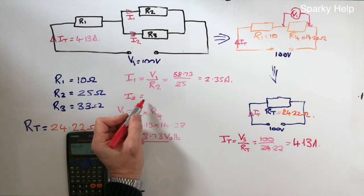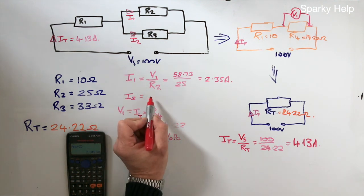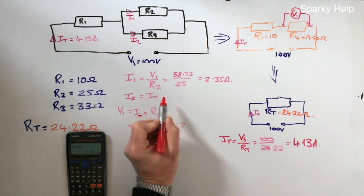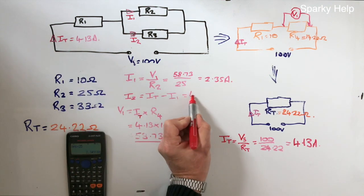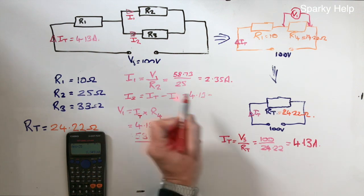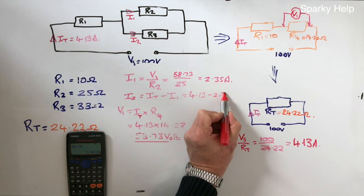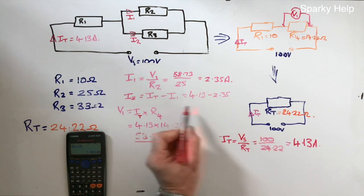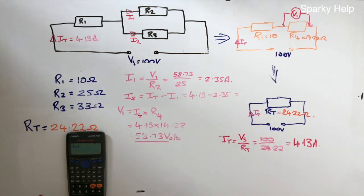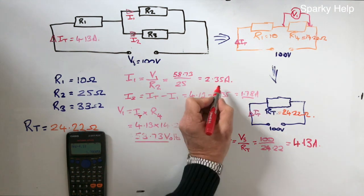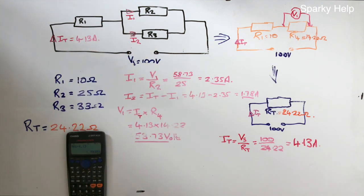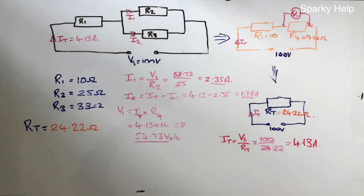We can now work out what I2 will be. Now last time we did Ohm's law again. However what we can do is we can apply Kirchhoff's current law. And that will be IT minus I1. So we know IT is 4.13. And we take away the other current which is 2.35. And this is 1.78. So there's our 3 currents flow around in this circuit. And here at this point.